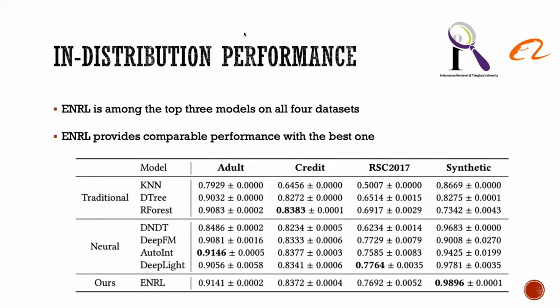The last is in-distribution fitting performance. In general, neural networks perform better than traditional machine learning methods due to their extraordinary expressiveness. Deep neural decision tree is designed for numeric features, which does not perform well on datasets with many categorical features like Adult and RecSys Challenge 2017. DeepFM performs the best on the largest dataset RecSys Challenge 2017, but does not have good performance on small datasets such as Adult and Credit, since neural networks with fancy structures require plenty of data to train. In contrast, ENRL is among the top three models on all four datasets and provides comparable performance with the best one.